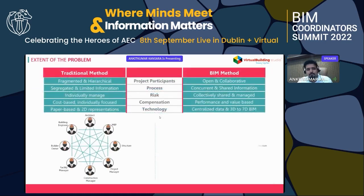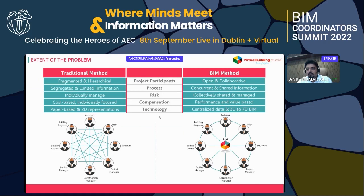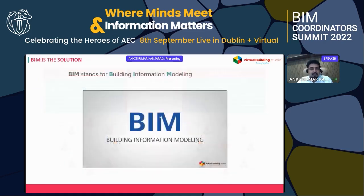The solution becomes clear when you compare the traditional method and the BIM method. In the traditional method, project participants are fragmented and hierarchical, whereas in BIM they are open and collaborative. Technology in the traditional method is paper-based, while BIM-based technology is centralized — you can collaborate collectively, coordinate, and manage all information in one place.